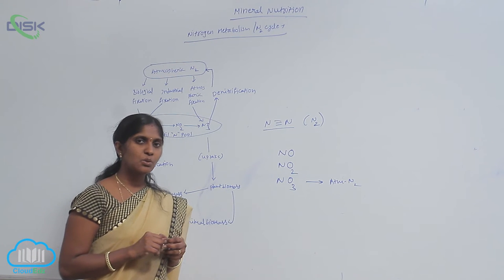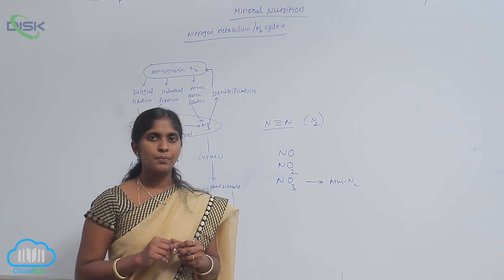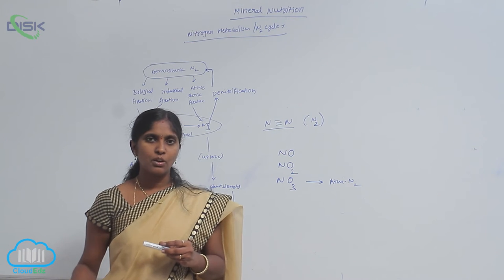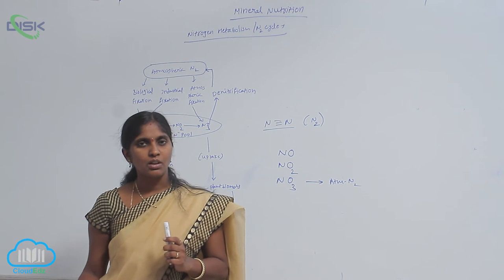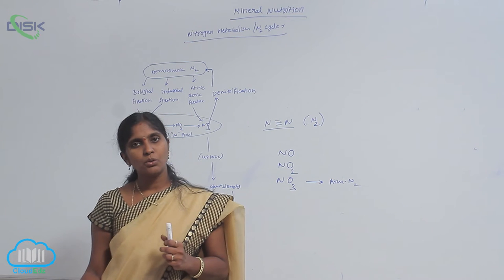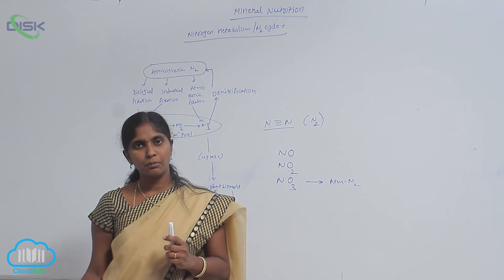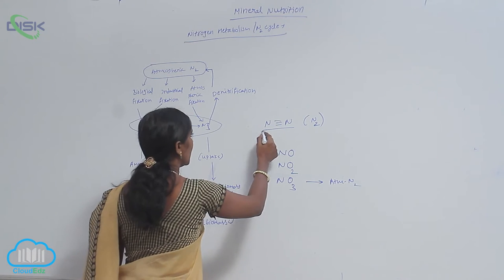The atmospheric nitrogen is fixed into soil-available nitrogen. It means the atmospheric nitrogen is in the form of N2. It means two nitrogen atoms are bonded by a triple bond, that is N triple bond N.